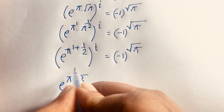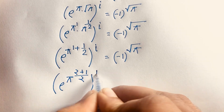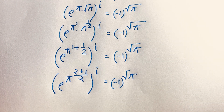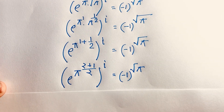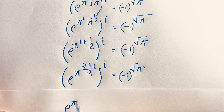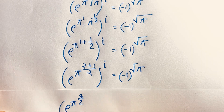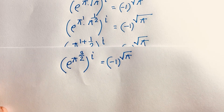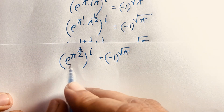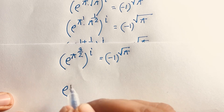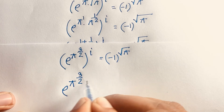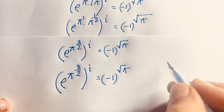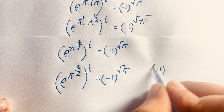This common rule gives two plus one in the bracket, so the power is three over two. Therefore e to the power pi to the power three over two, whole to the power i, is equal to negative one to the power square root pi. Recall our question: minus one to the square root pi is equal to what.